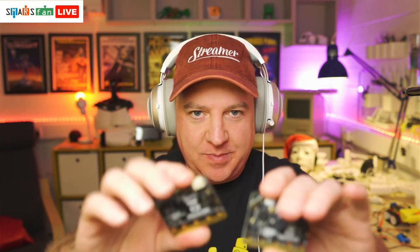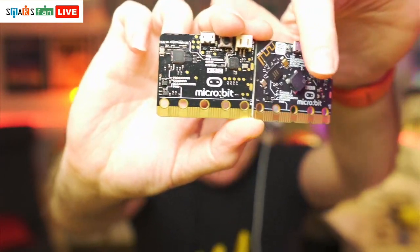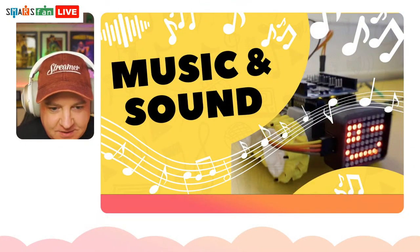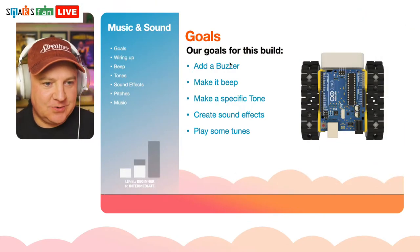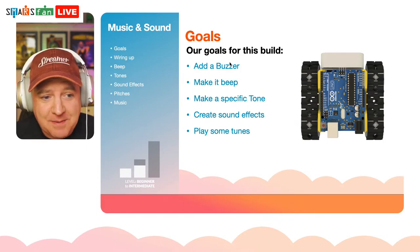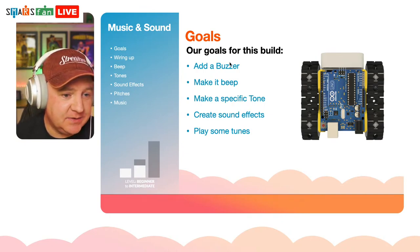If we have time we'll also add it to our Dabble app. I also want to talk to you about micro:bits — my new micro:bit arrived this week and you can see it has a lot more circuitry on it. So the goals for today: add a buzzer, make it beep, make a specific tone and pitch, create some sound effects, and play some tunes.